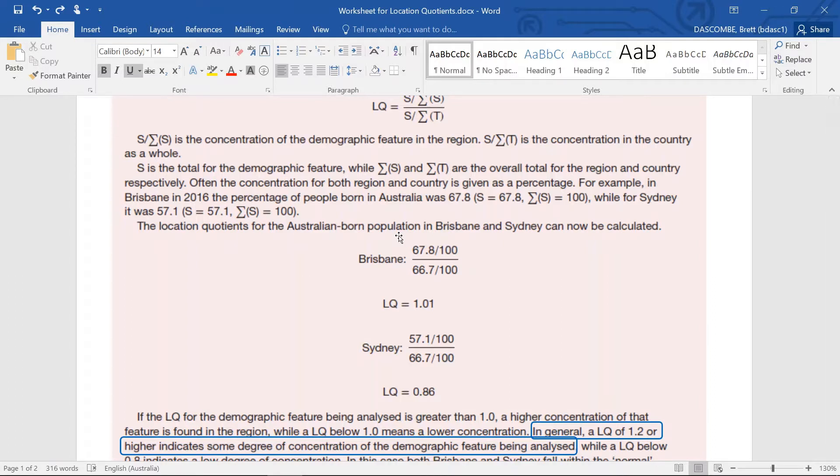So Brisbane has a percentage of 67.8% of Australian-born population in the city. Now the second figure, down the bottom, 66.7%, is the Australian-born population for Australia. So we're going to have Australia there, but down further you'll see that I've put that in.